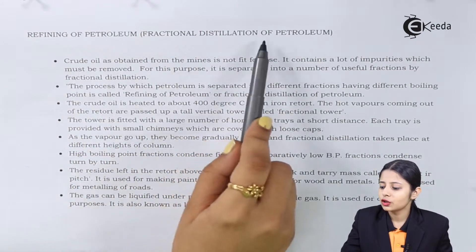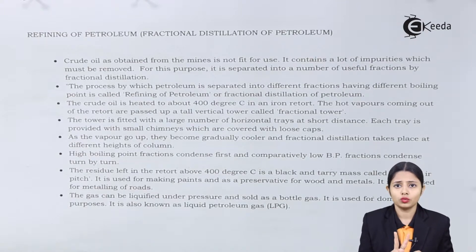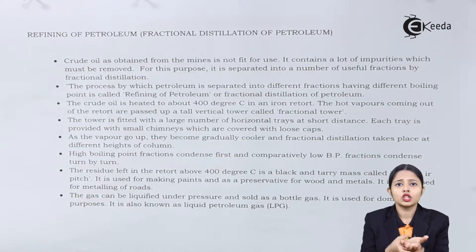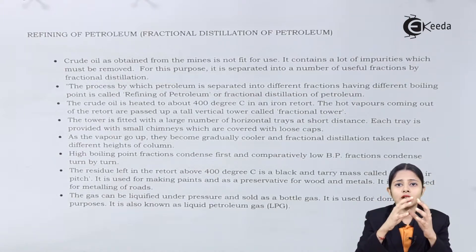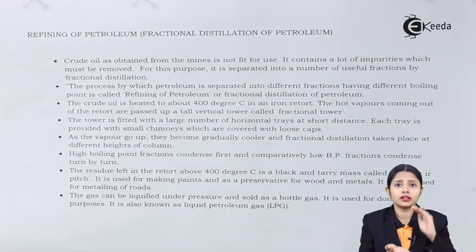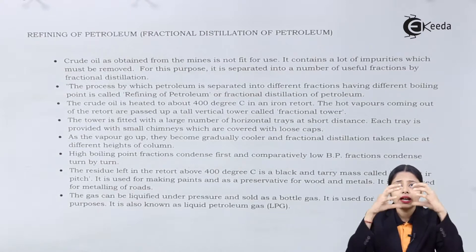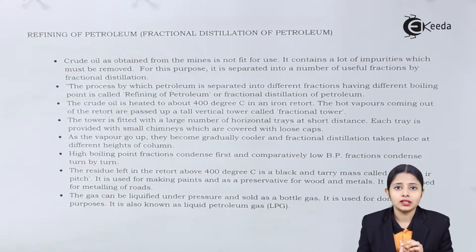Refining of petroleum — fractional distillation of petroleum. What do I mean by distillation? Distillation is nothing but heating something and making sure that it goes into its vapor form. Once it goes into its vapor form, cooling it down, condensing it and getting it back into its liquid form. When heating something at its boiling point, that substance will evaporate and all the impurities will remain. When condensed and cooled down, you get the pure form of it.